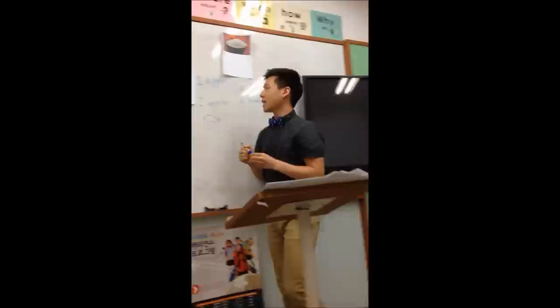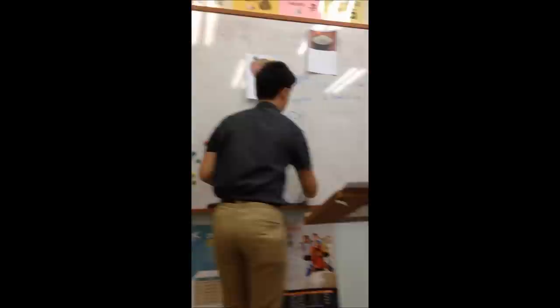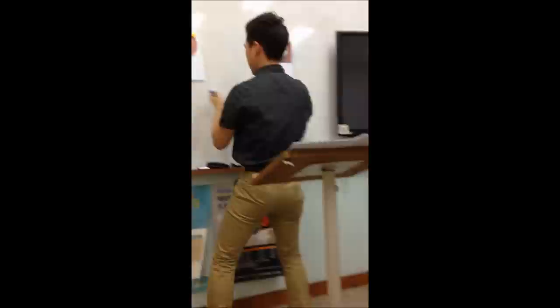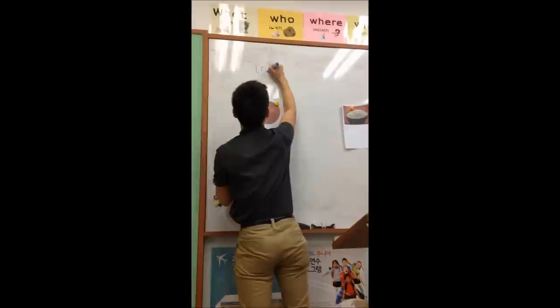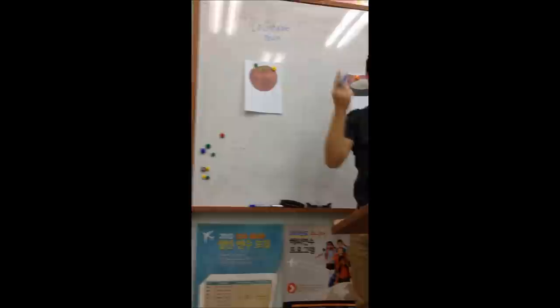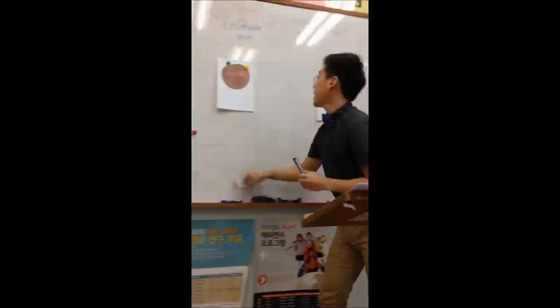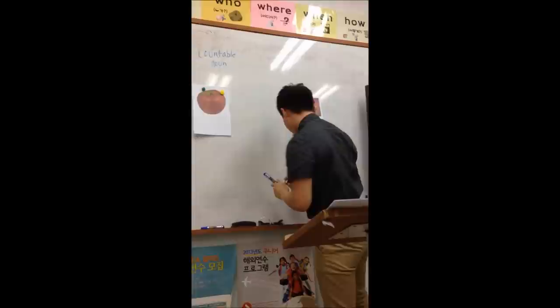Do you guys understand? With apple, you can count, right? With rice, can you count? No. So this means that you can count one apple, two apples — this would be a countable noun. Everybody say countable noun. Countable noun. It's easy — see the word count? You can count it: one, two, three. And then what is this? This word is called uncountable noun. Yes, good job. Everybody say uncountable noun. Uncountable noun.